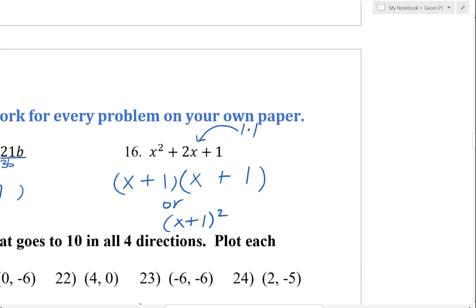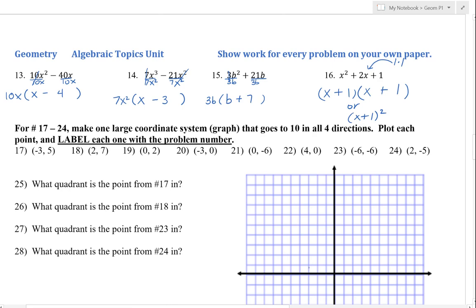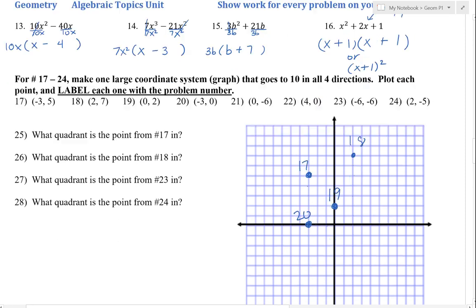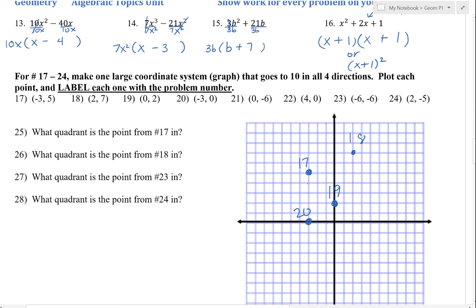And we're just doing a little review here, so plotting these on that coordinate plane. So when you plot the point negative 3 comma 5, we're going left 3 up 5. And it says to label each one with a problem number, so put 17 by that. 18 is at 2 comma 7. 0, 2 for 19. Negative 3, 0 for 20. 21 is at 0, negative 6.